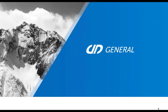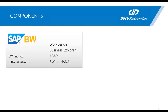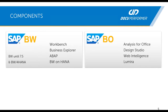Let's start with the general facts about the Doku Performer. First of all, Doku Performer supports BW — for example, BW 7.5 and BW4HANA — and all the workbench entities and the entities of the Business Explorer, ABAP and BW1HANA. But Doku Performer also supports other components like BO, so SAP BO. You can synchronize the entities of the Analysis for Office component, also Design Studio Application, Web Intelligence and Lumira.